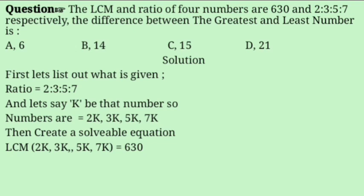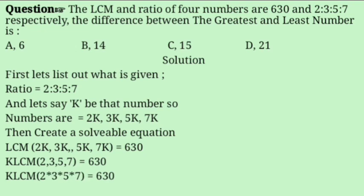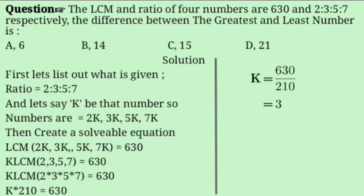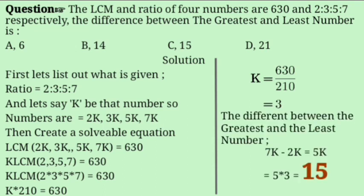LCM of 2K, 3K, 5K, 7K equals 630. Since 2, 3, 5, 7 are all prime, LCM = K × 2 × 3 × 5 × 7 = 210K = 630, so K = 3. The greatest number is 7K and the least is 2K, so the difference is 5K = 5 × 3 = 15.